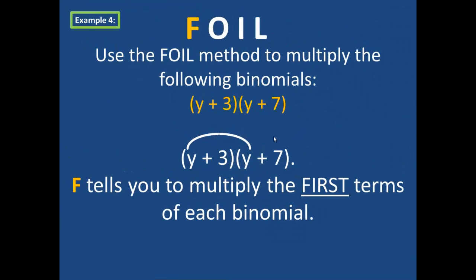When using the FOIL example, as we will in example number 4, we are going to multiply the 2 binomials y plus 3 times y plus 7. The F in FOIL stands for first, and it means that I will multiply the first term of each binomial. Y times y is y squared.